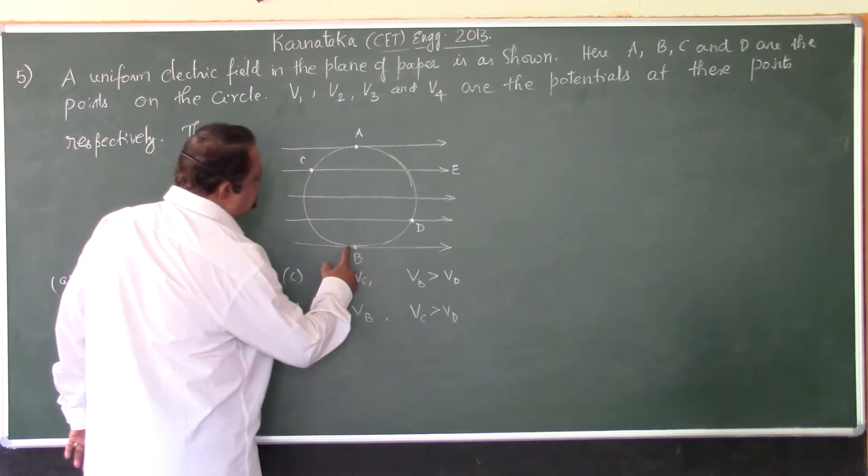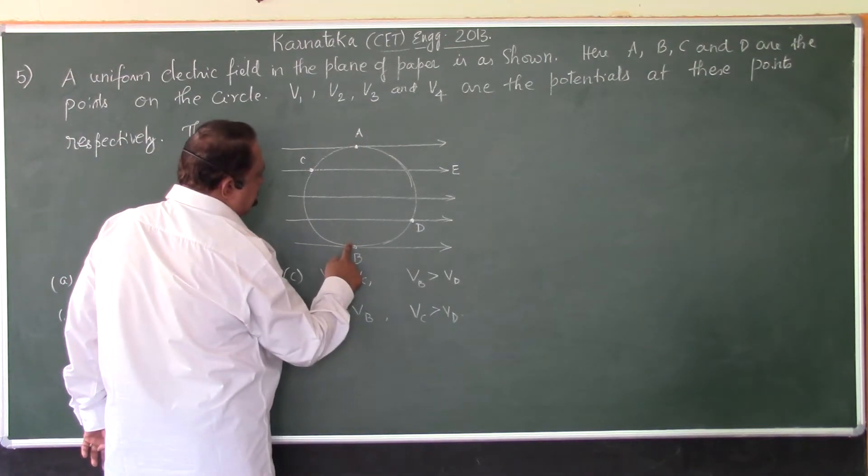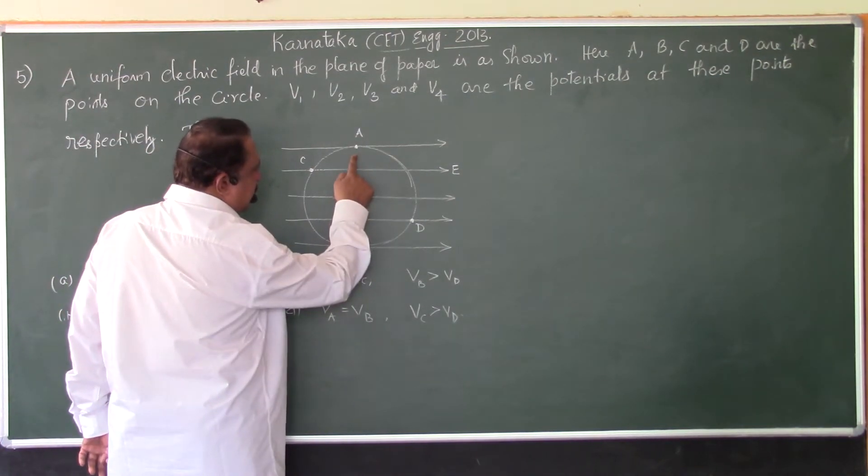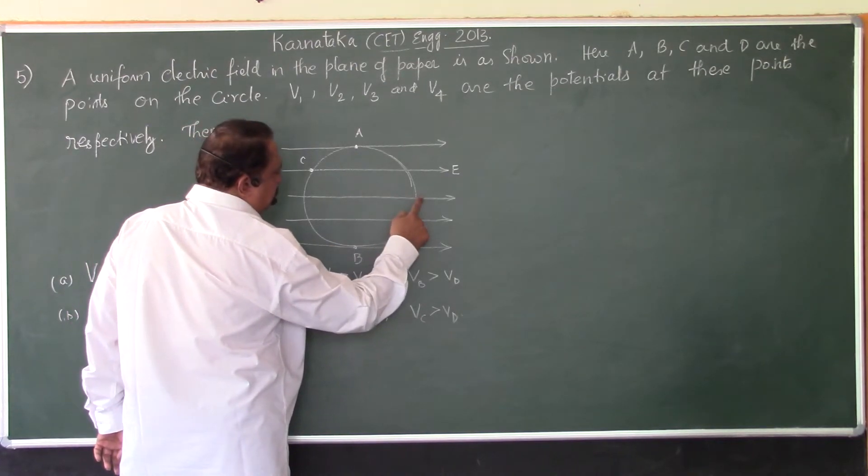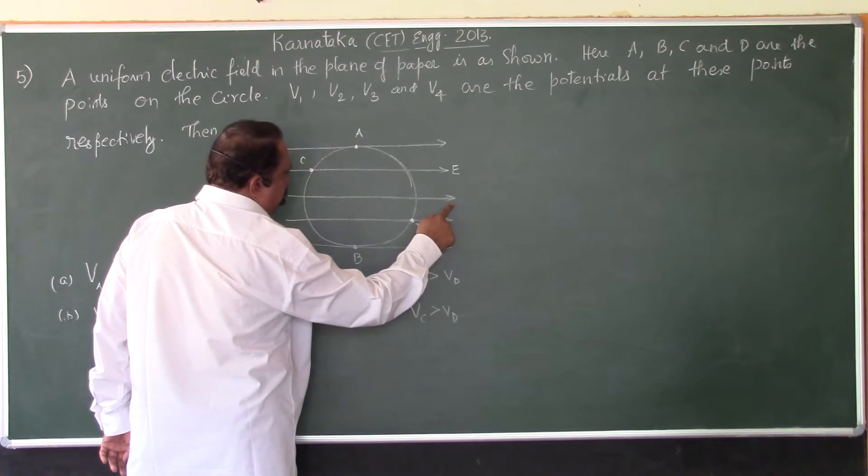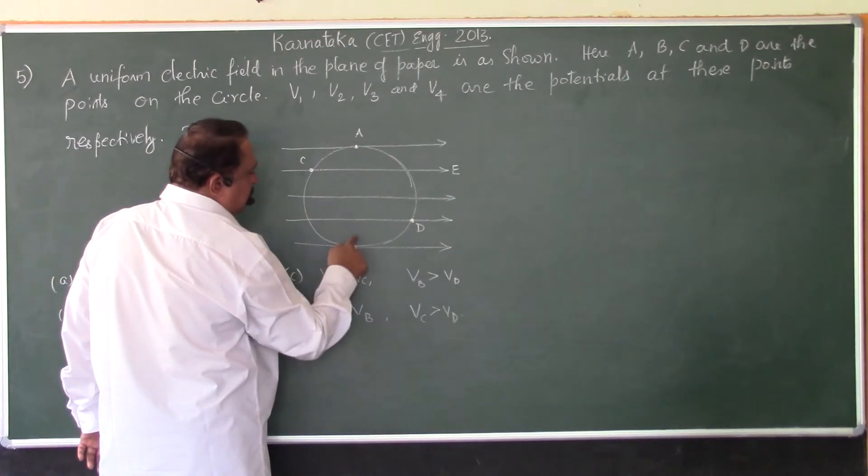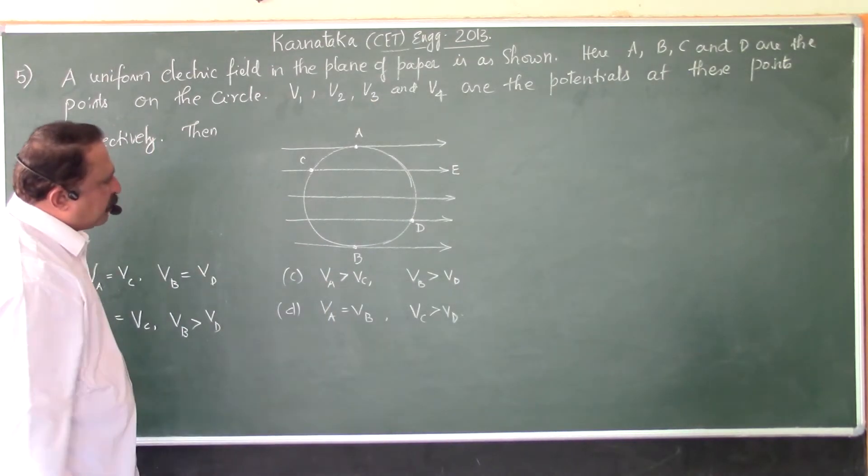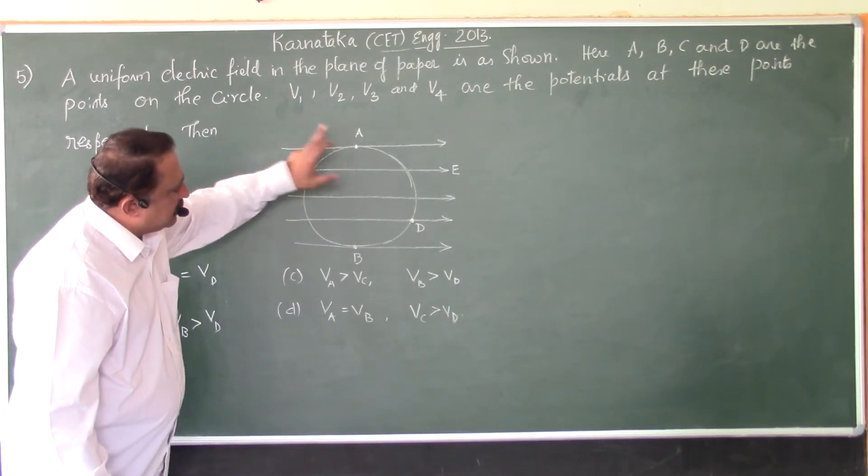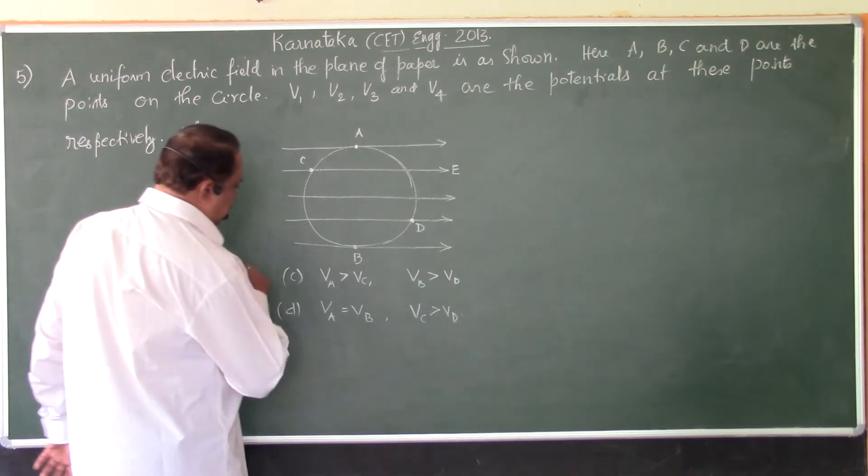Now, if you observe, the points A and B are equidistant from a point. A and B are equidistant. Therefore, the electric potential at these two points must be same. So, we should have VA is equal to VB.